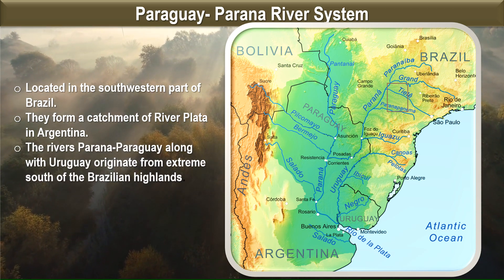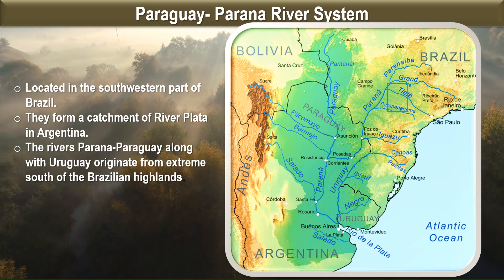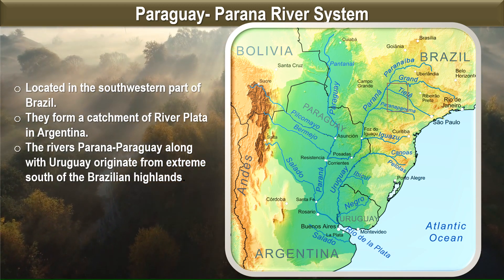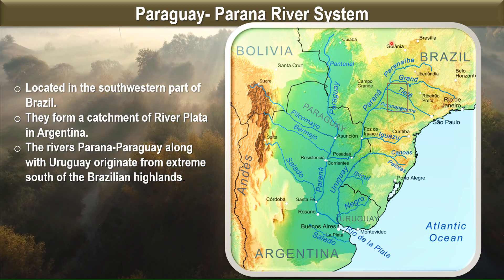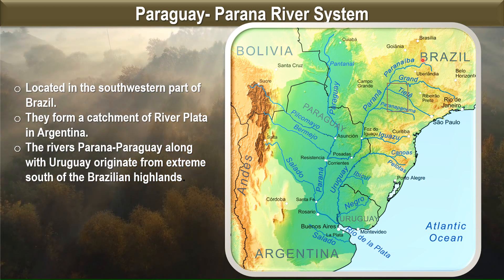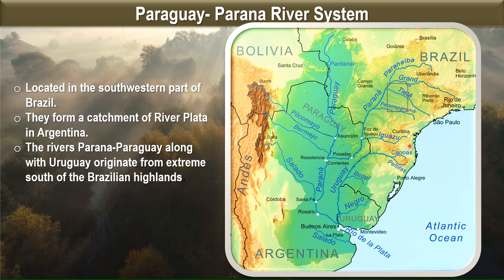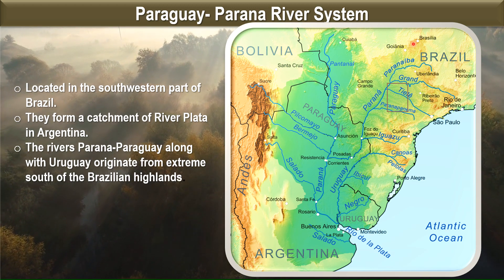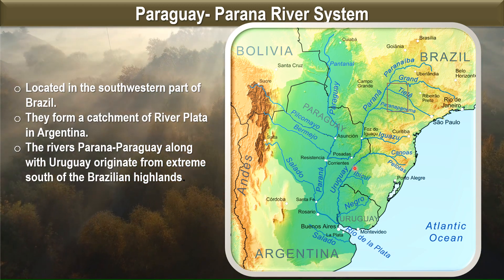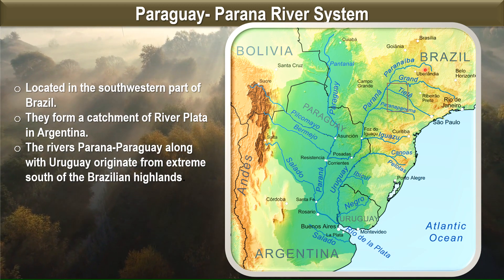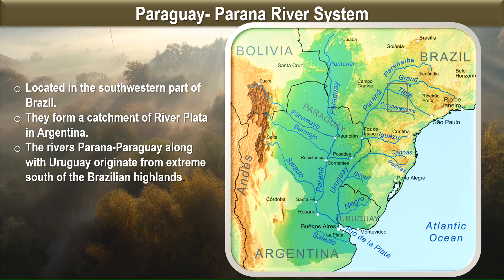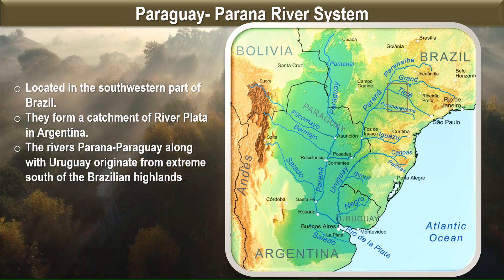The rivers Paraguay and Paraná, along with Uruguay, originate from the extreme southern part of the Brazilian Highlands, shown here in brown shading on the map.